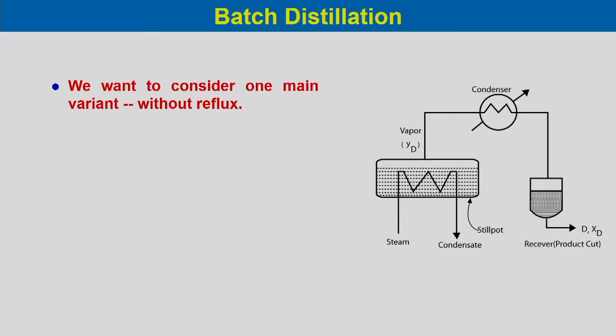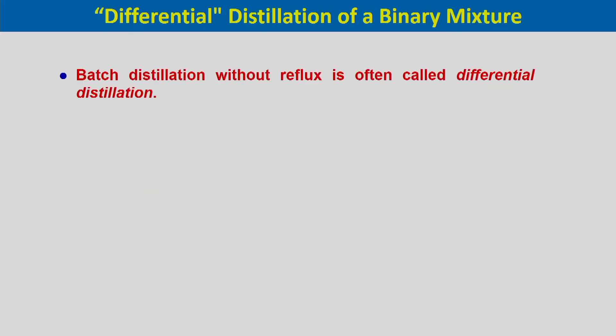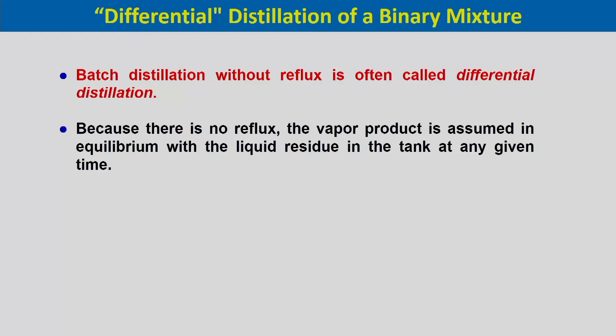We will first consider batch distillation without reflux, known as differential distillation. Because there is no reflux, the vapour product is assumed to be in equilibrium with the liquid residue in the tank at any given time. There is intimate contact between the vapour and liquid in the drum, so the vapour reaches equilibrium with the residue liquid — that is why it is called differential distillation.